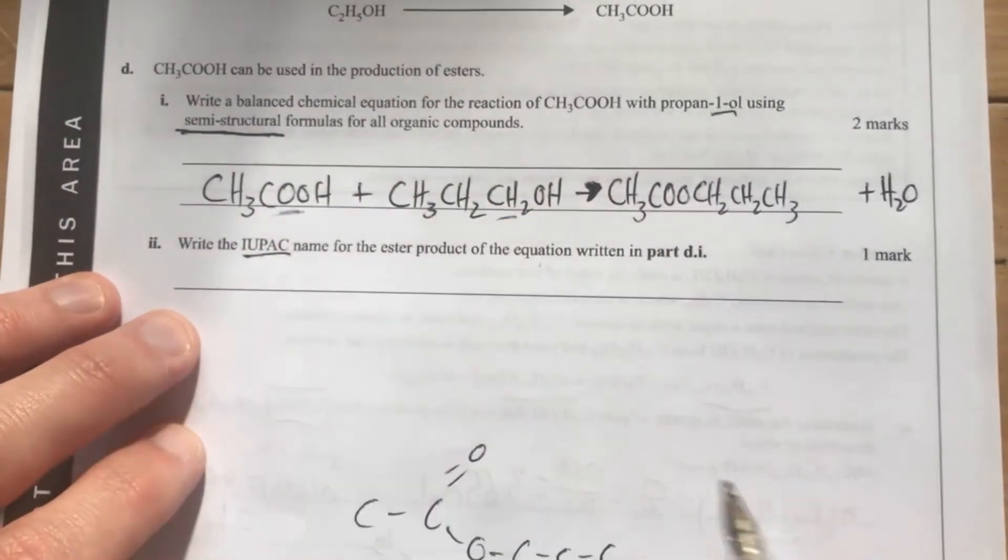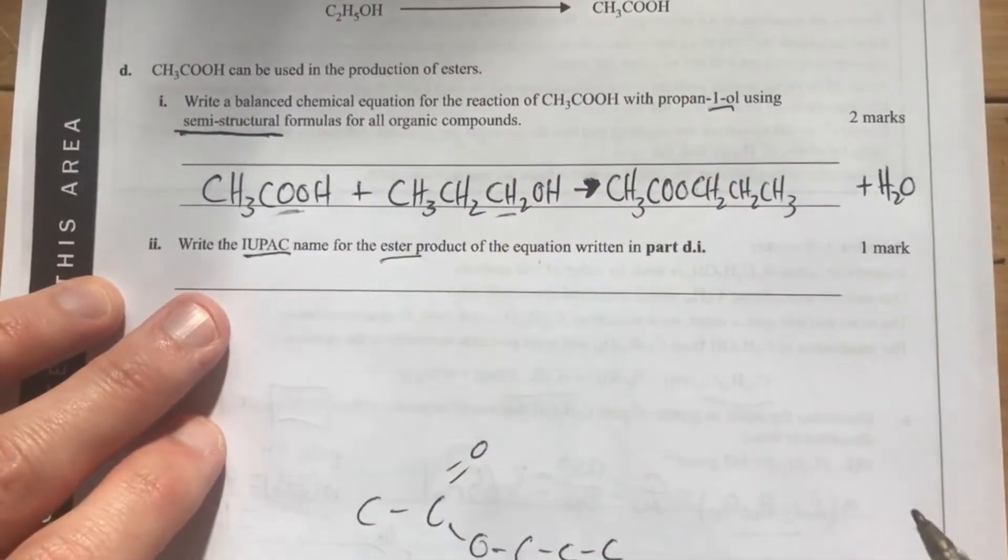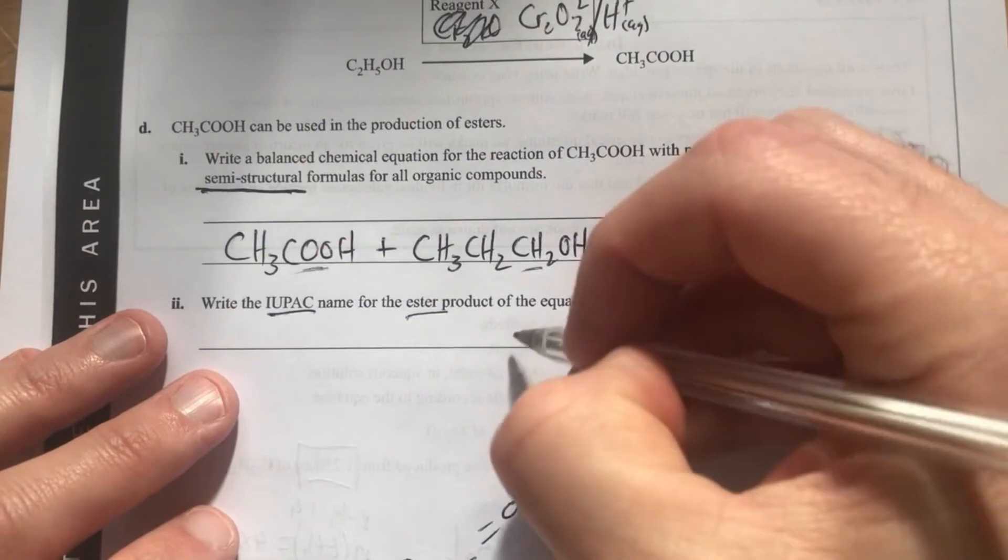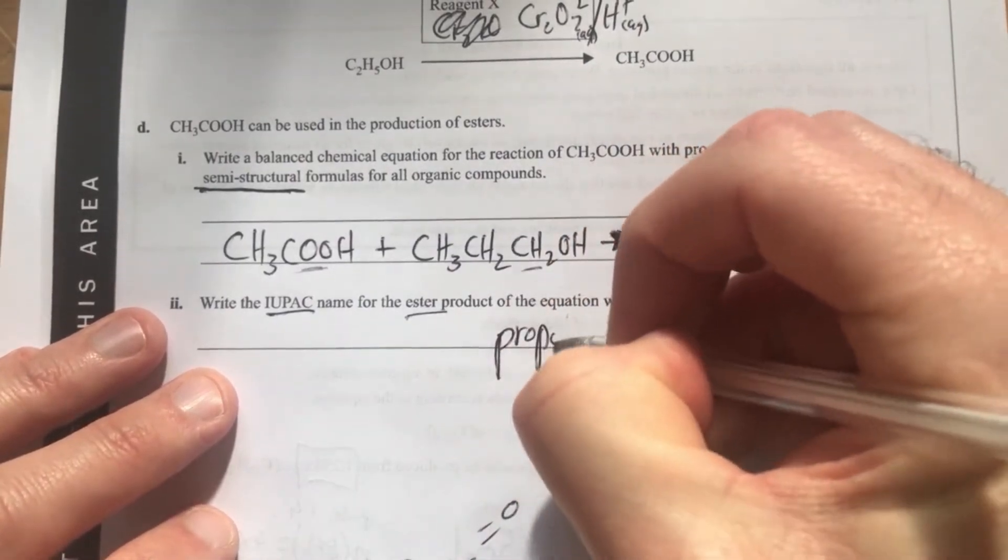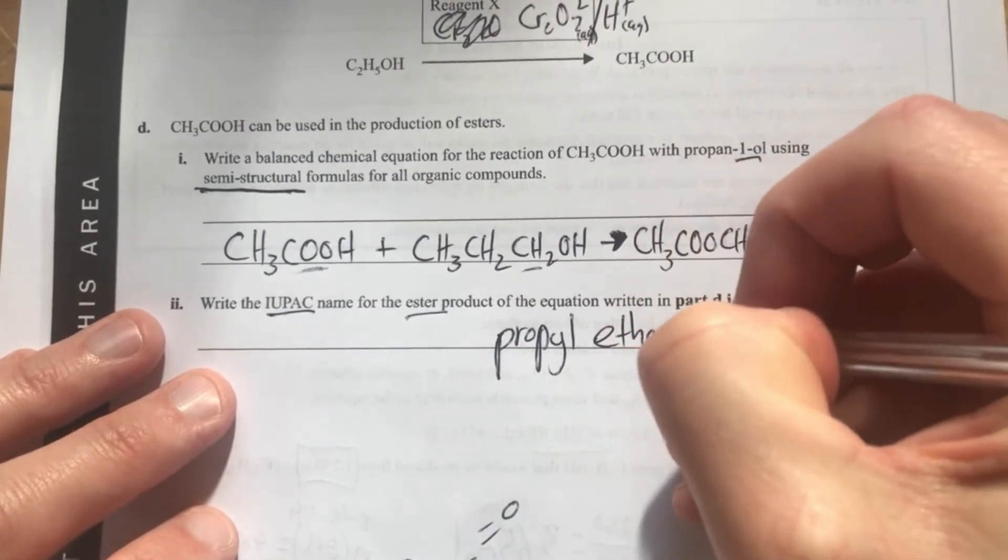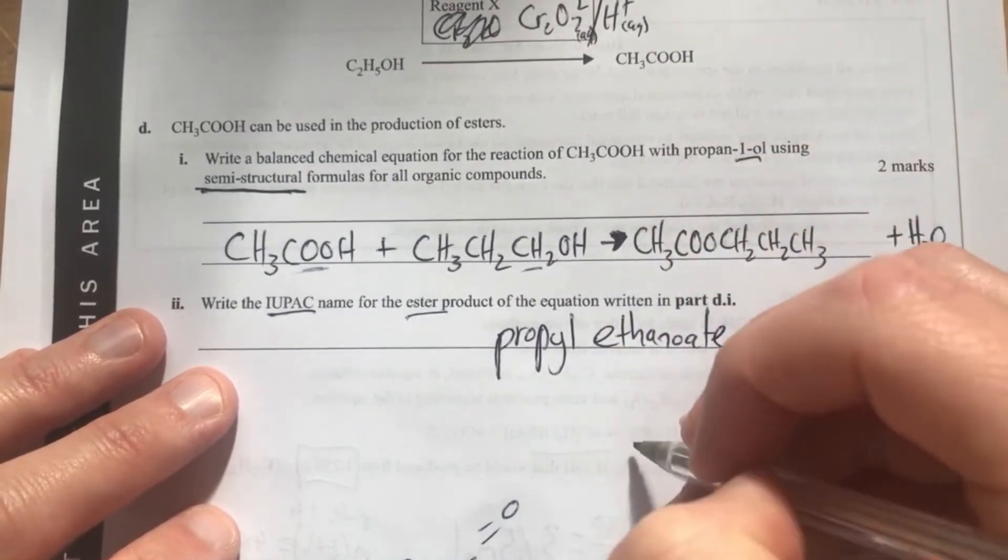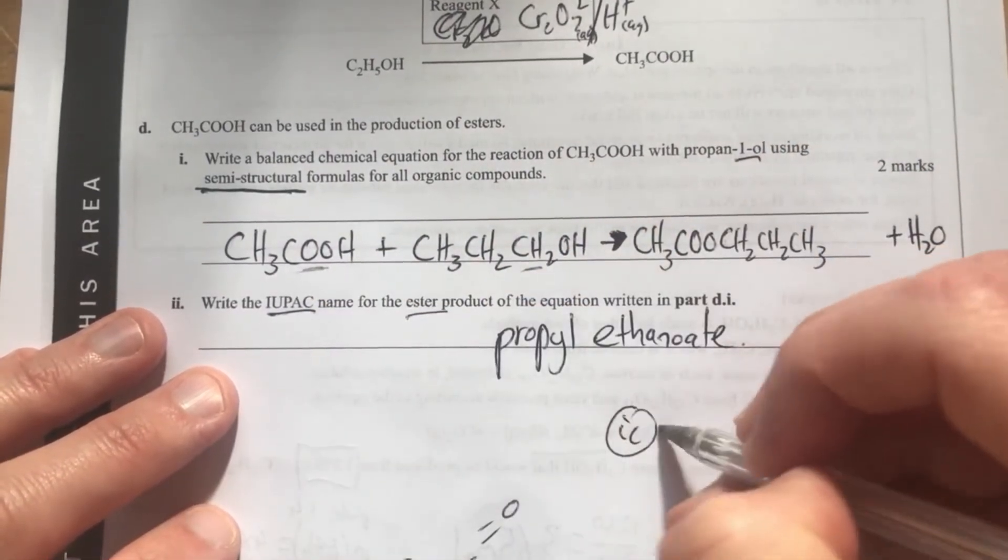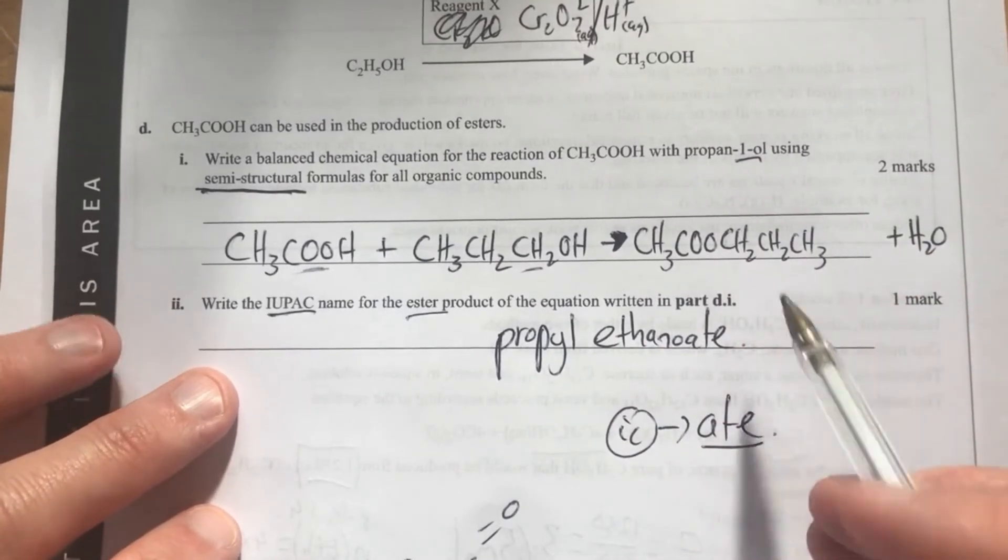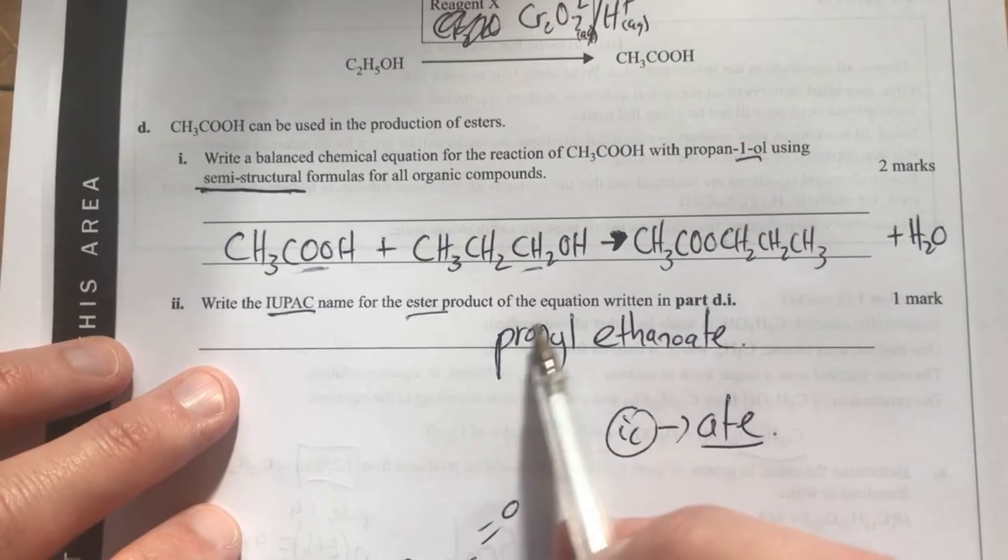The IUPAC name for this ester product: esters are named from the alcohol and the carboxylic acid. So I'm going to be writing propyl, because it came from propanol, and ethanoate. Remember the -oic from my acid becomes -oate in my ester, and my alcohol is my first part there.